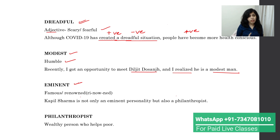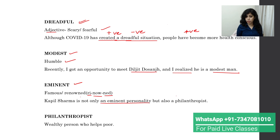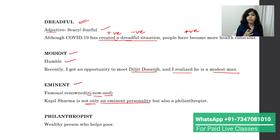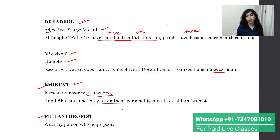Next is 'eminent,' which means famous and renowned. We also have 'philanthropist' — a wealthy person who helps the poor. For example: 'Kapil Sharma is not only an eminent personality but also a philanthropist.' He does social work and helps the needy. So here we use both eminent and philanthropist together.